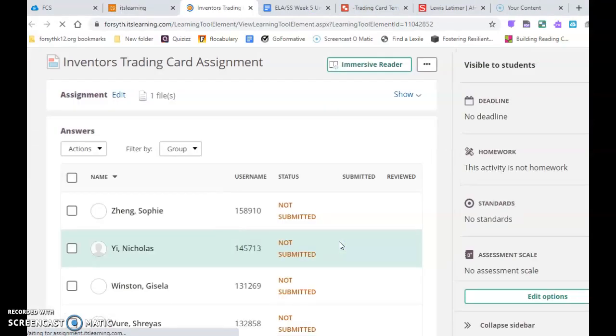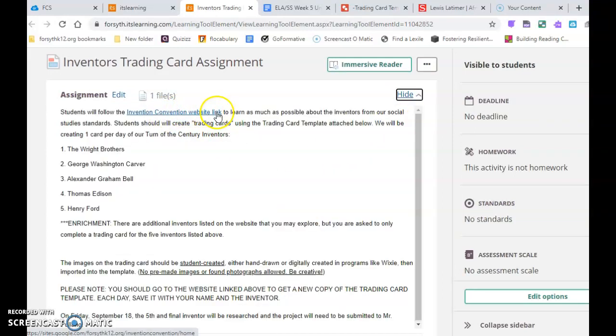And this week we're going to study five inventors. So if you look at this, you are going to go to this website and essentially make some trading cards, like baseball cards. So you're going to have a picture and some information on the back. And these are five inventors, even though the Wright brothers, they count as one inventor. They are two people, though.